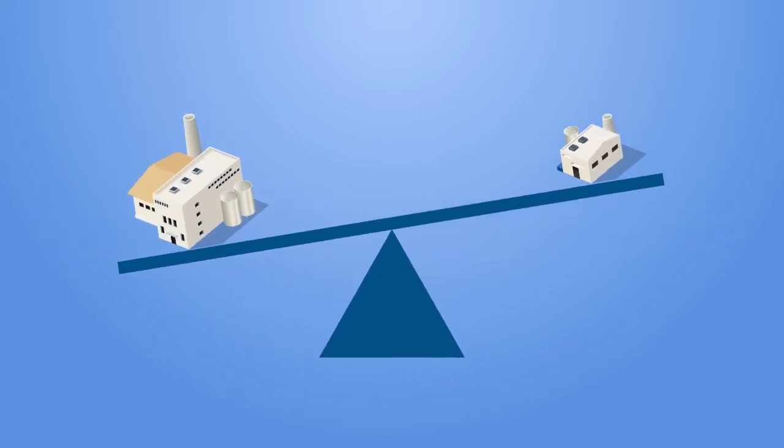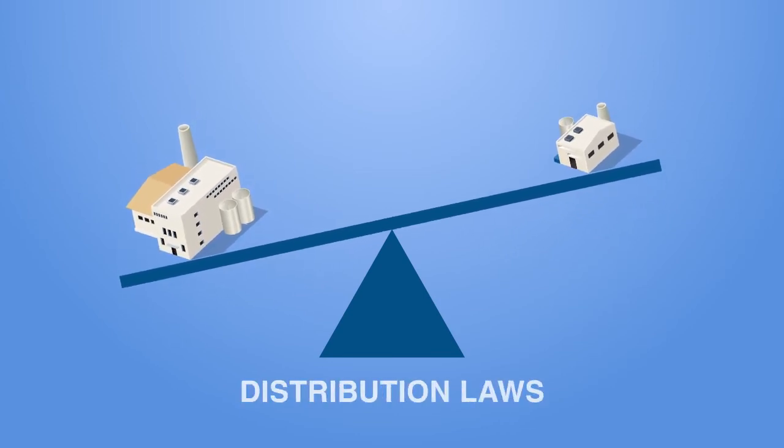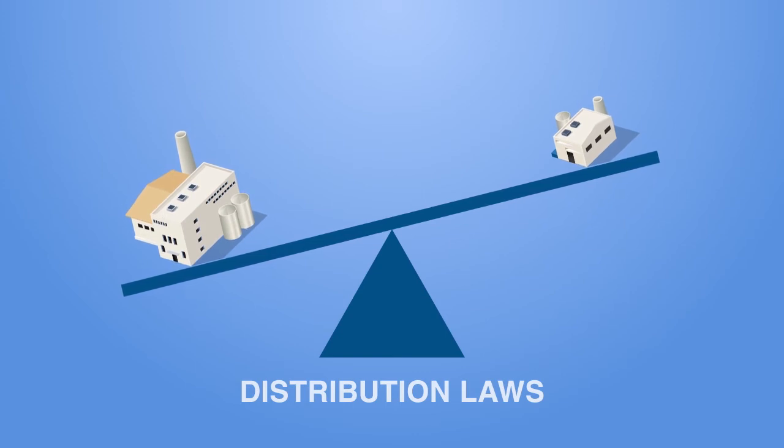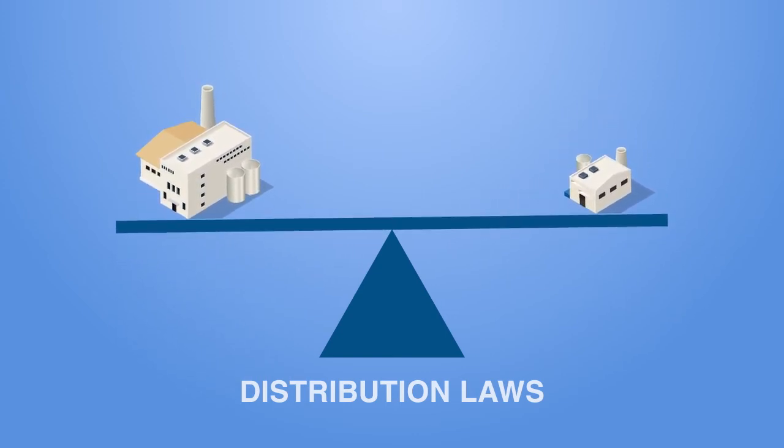Laws that promote and maintain independence in the distribution tier of the industry allow for the smallest upstart suppliers to compete with the largest multinational corporations on a level playing field.